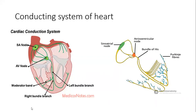What is the blood supply to the conducting system of the heart? This is important because if the artery supplying a part of the conducting system gets blocked, it will lead to blockade of that part. The artery supplying the SA node — in about 60% of the population — is a branch from the right coronary artery. The AV node — in 80% of the population — also receives its blood supply from a branch of the right coronary artery.